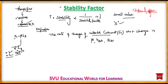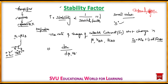The next parameter is ICBO, the collector-to-base leakage current. The collector current is given by: Ic = beta × Ib + (1 + beta) × ICBO. The rate of change of collector current with respect to ICBO is indicated as S, with respect to beta as S-dash, and with respect to VBE as S-double-dash.